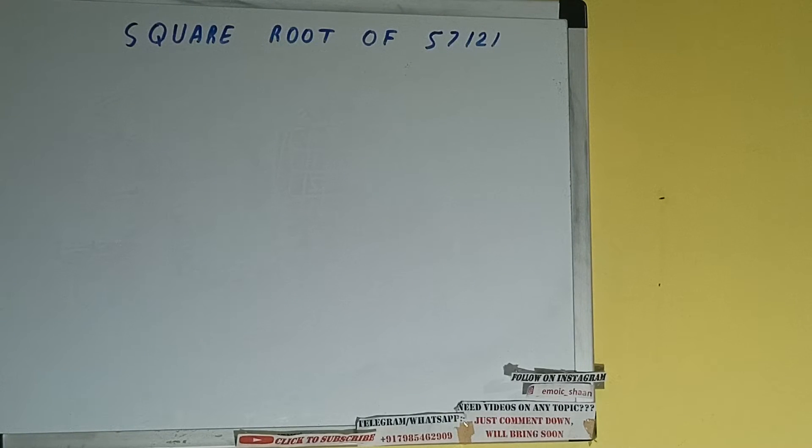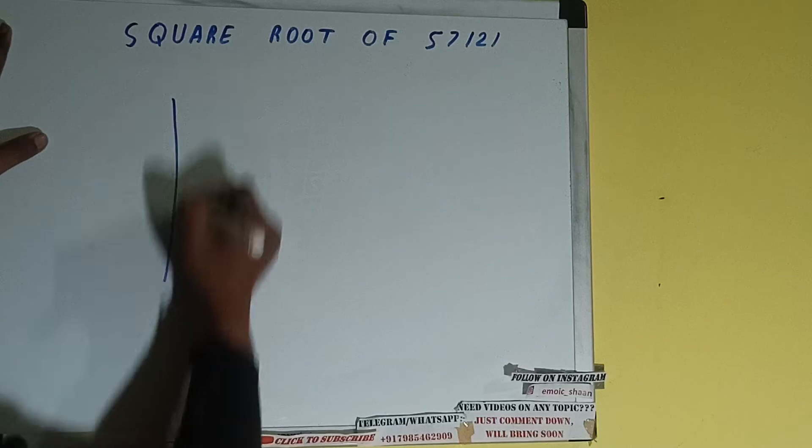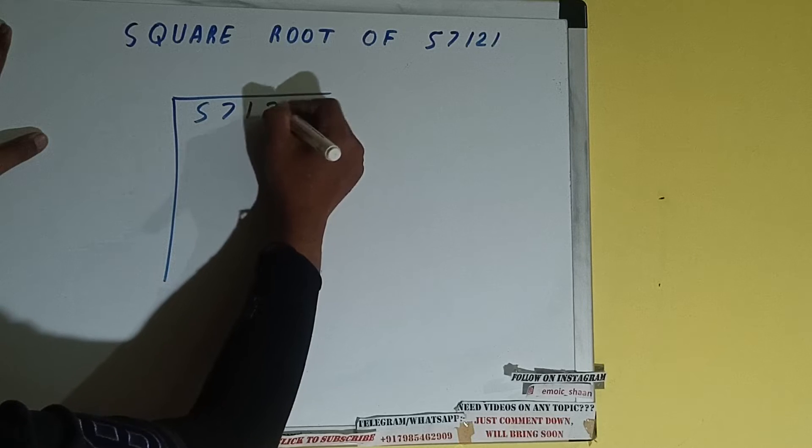Hello friends, in this video I will be helping you with the square root of the number 57121, so let's start. First of all we need to write the number like this: 57121.